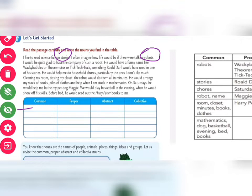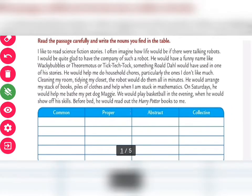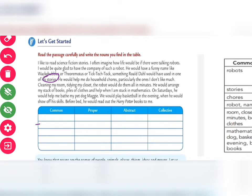"He would have a funny name like Wiki, Bubbles, Theo Matters, or Tick-Tack-Tock." These are names — you will write them under proper noun. "Something Roald Dahl would have used in one of his stories." So 'Roald Dahl' is a writer's name — write it under proper noun. And 'story' here again is a common noun.